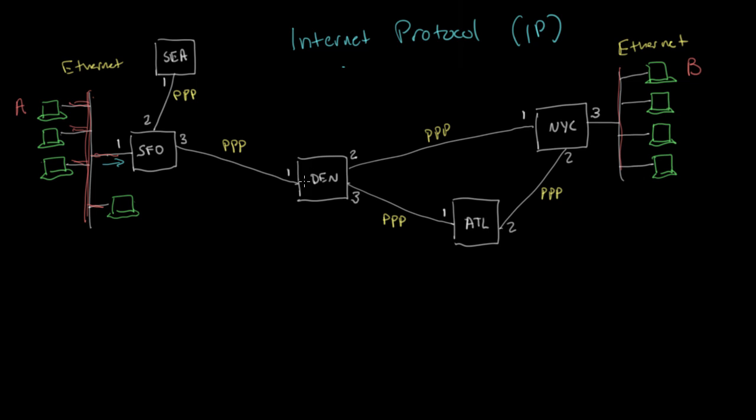And then the Denver router will do the same thing. It'll look at the packet inside the PPP frame, look at the destination IP address, and decide which of these interfaces it's going to forward it out of. So that's what routers do. They receive packets on each of their interfaces and make a decision about which other interface to forward them out of. And so that's the process of forwarding.